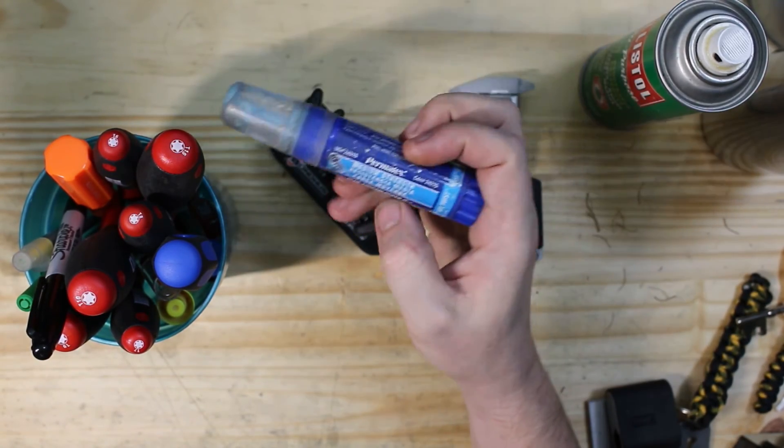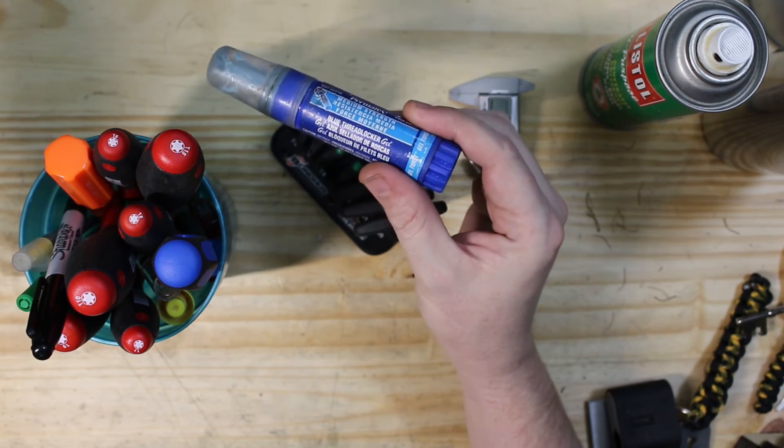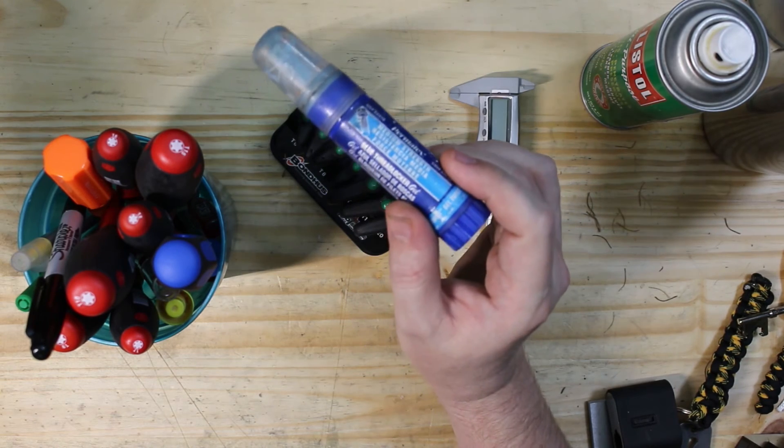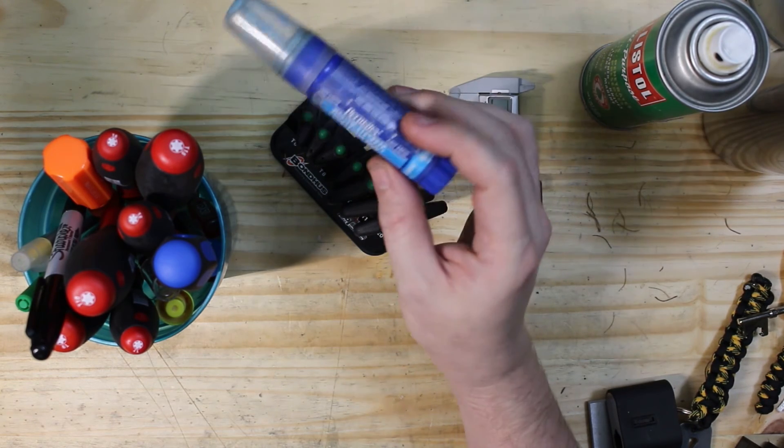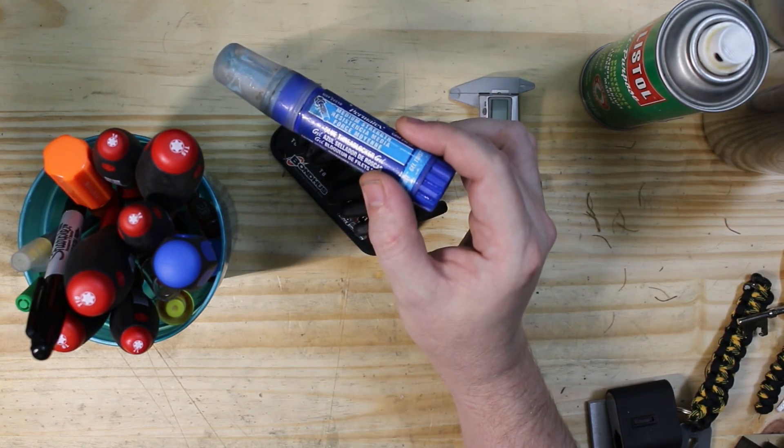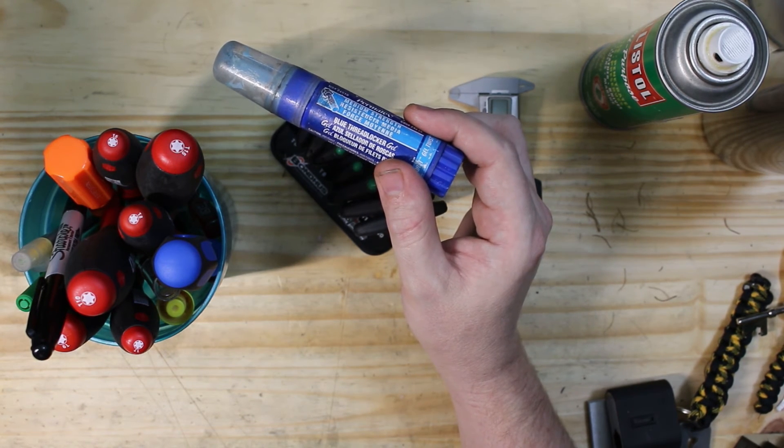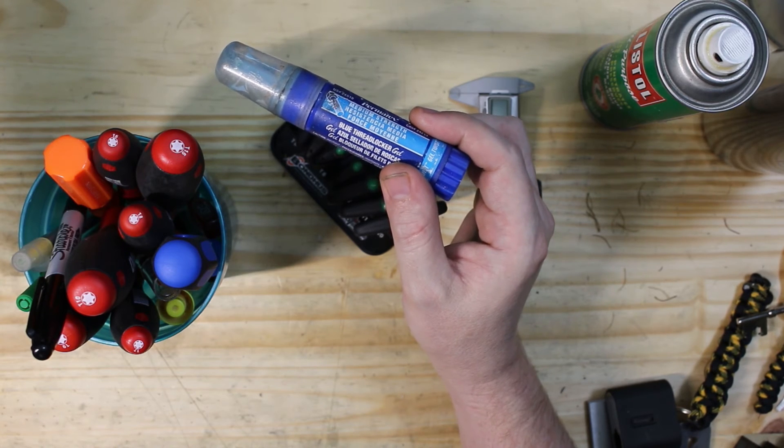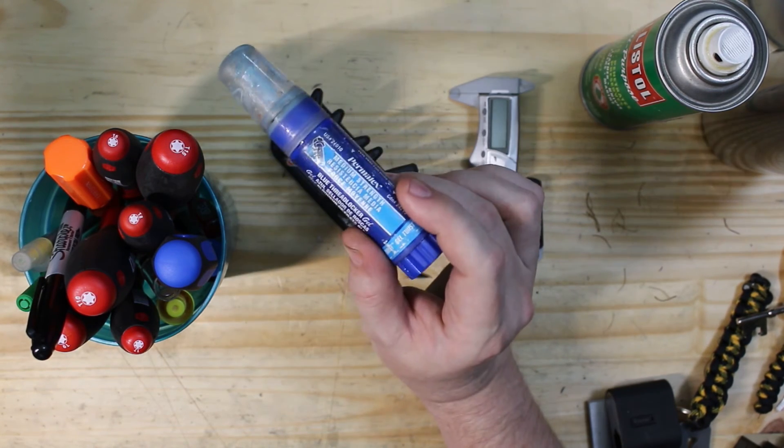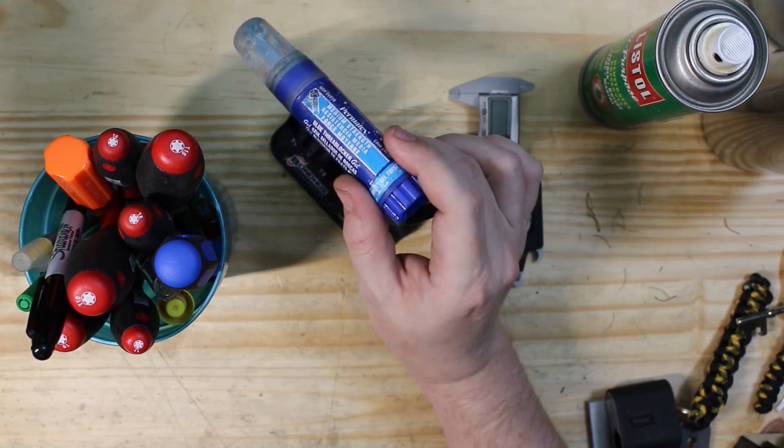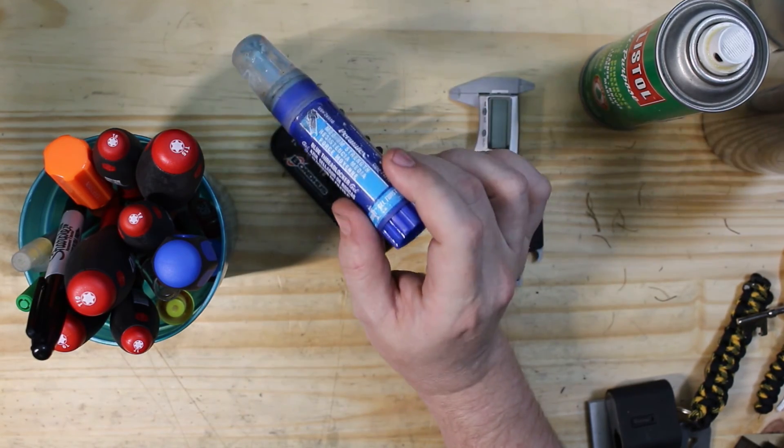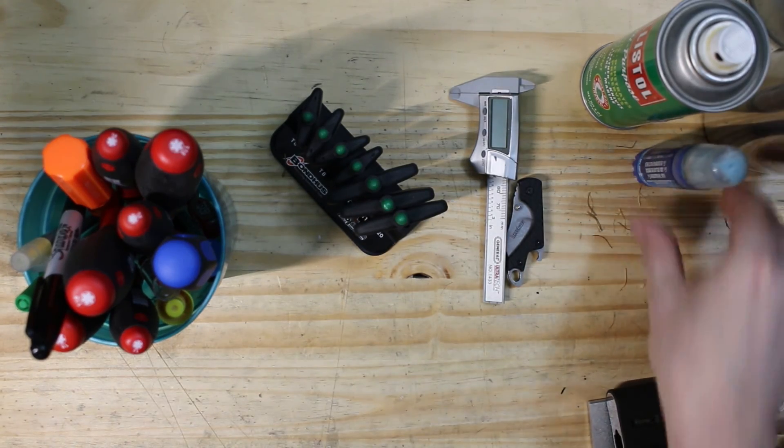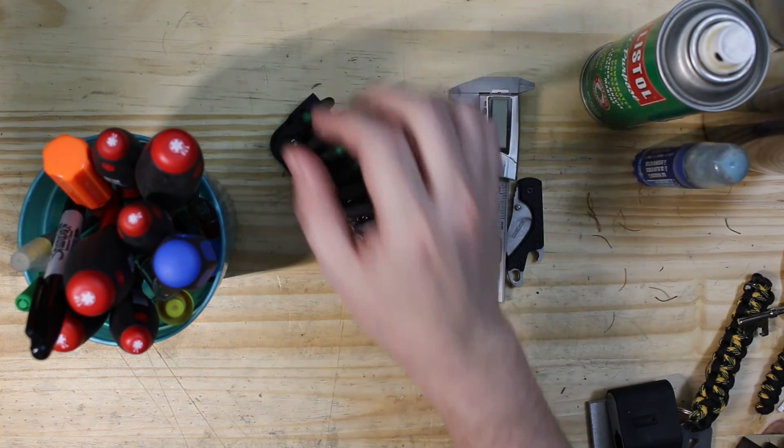To finish off putting it back together, we've got some blue thread locker gel. You know the rules here. If it's red or says red thread locker, I have seen red thread locker in a blue tube and bottle, so read it, don't just go by the color. You want to use blue. Red is something a whole lot closer to permanent. It's really hard to get things apart if you use red thread locker.